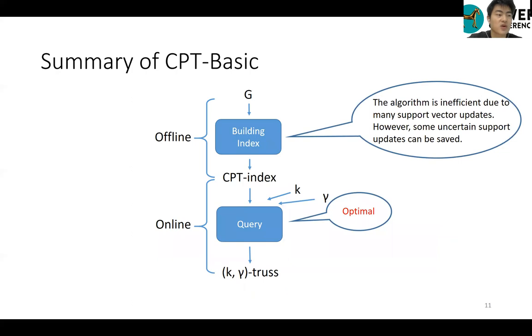Here is the summary of our algorithm 1 CPT-basic. We first compute the index offline according to the graph G, and then we can query the k-gamma-trust online according to the index. The query process is optimal, but the indexing process is inefficient due to many support vector updates.